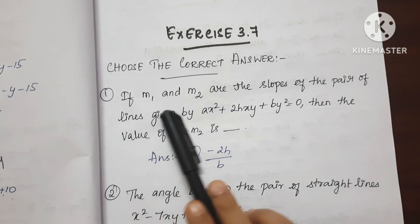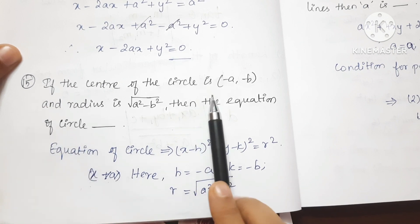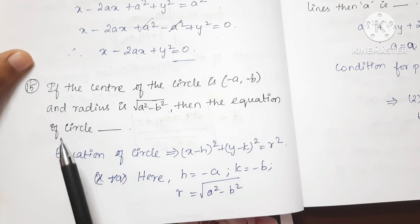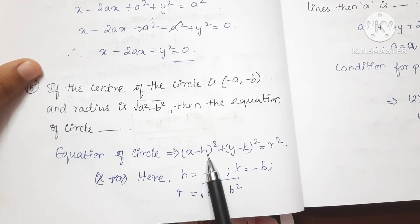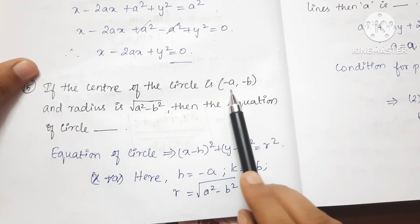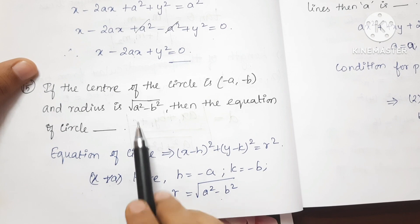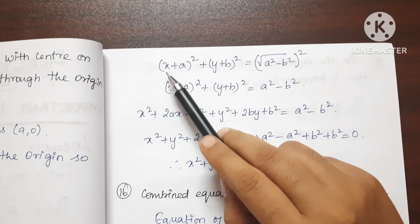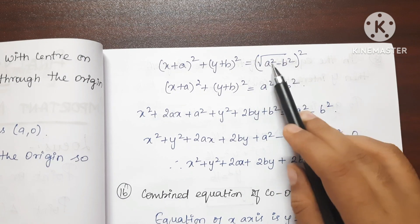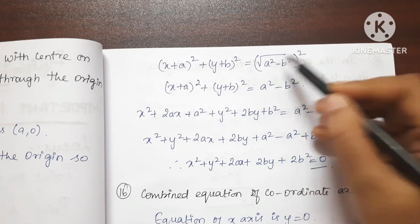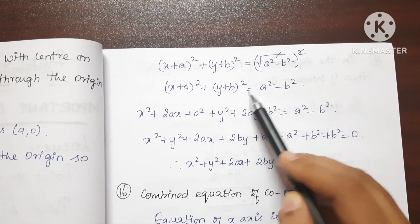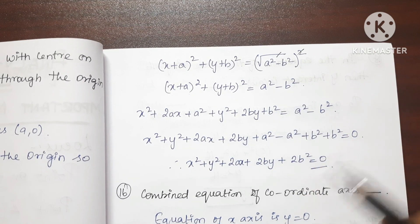Now we can check the correct answers. Question 15: If the center of a circle is (-a, -b) and the radius is √(a²-b), then the equation of a circle is (x-h)²+(y-k)²=r². So h=-a, k=-b. Substituting: (x+a)²+(y+b)² = (√(a²-b²))². The square roots cancel, giving (x+a)²+(y+b)² = a²-b².